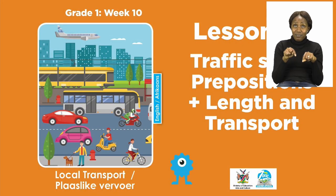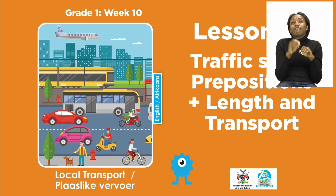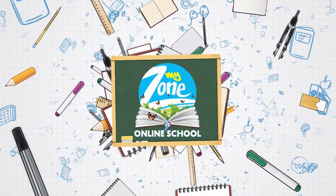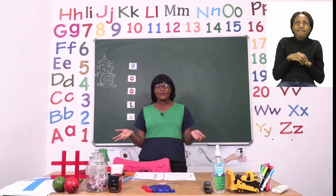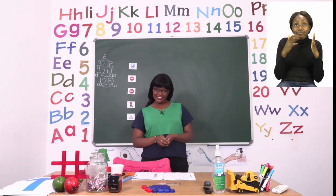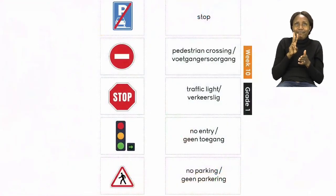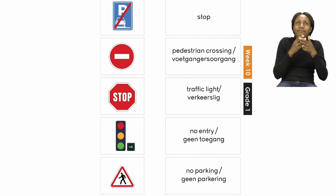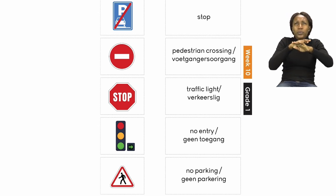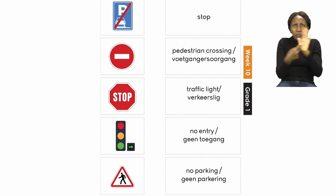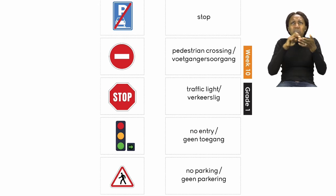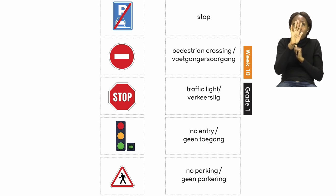For today's lesson we will be talking about traffic signs, prepositions, length, and transport. Now boys and girls, for us to start our lesson let us go to page 23. On page 23 we are going to be matching our road signs. A part of transport is the ability to read what the road signs say. We have five road signs that are very important and I'm going to explain what each one means. So let's take a look at the board.